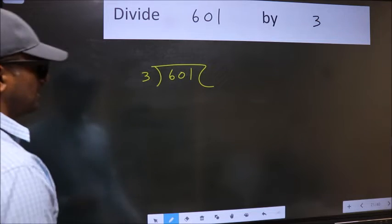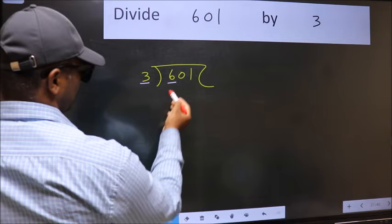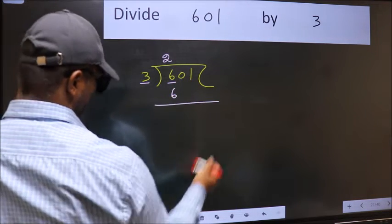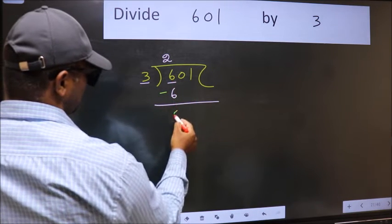Next, here we have 6 and here 3. When do we get 6 in 3 table? 3 times 2 is 6. Now we should subtract. 6 minus 6 is 0.